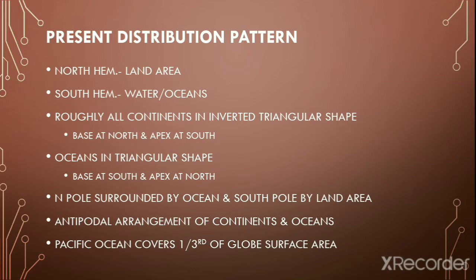Let's look into the present distribution pattern of continents and oceans. The northern hemisphere of the earth is dominated by land area — approximately 75% of the land area is in the northern hemisphere — while the oceans dominate in the southern hemisphere. Roughly, almost all continents are arranged in a triangular shape in which the base is towards the north and the apex is pointing towards the south.